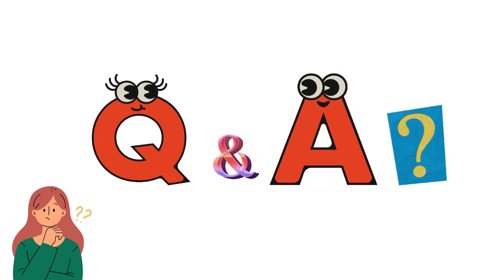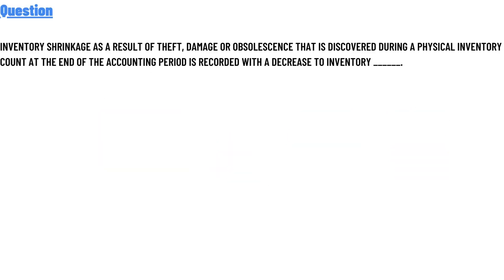Today's question is: inventory shrinkage as a result of theft, damage, or obsolescence that is discovered during a physical inventory count at the end of the accounting period is recorded with a decrease to inventory. The correct answer is: only in a periodic system.